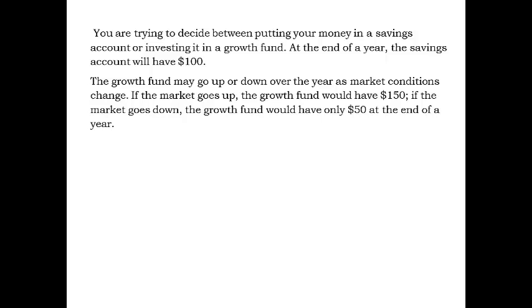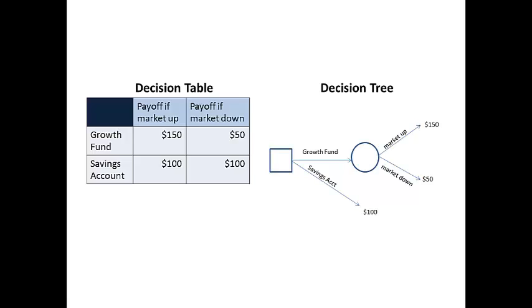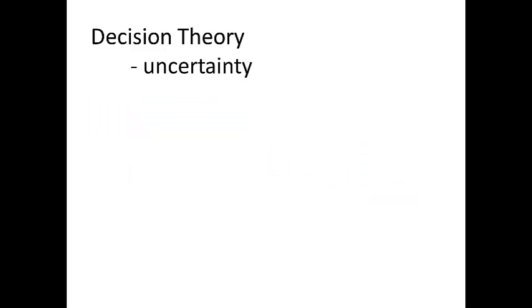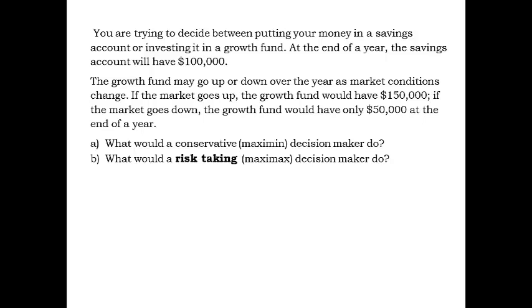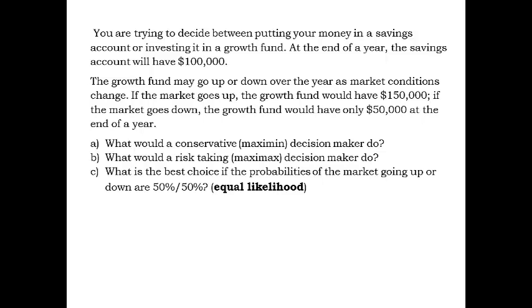This example can be presented as a decision table or as a decision tree. With the growth fund uncertain, there is not an obvious best choice. Partly it depends on the decision maker. A conservative decision maker might worry about the worst case scenarios, while a risk taker might focus on the best case scenarios. Between these two extremes are several ways to weight the various outcomes, including assuming the uncertain events have equal likelihood.